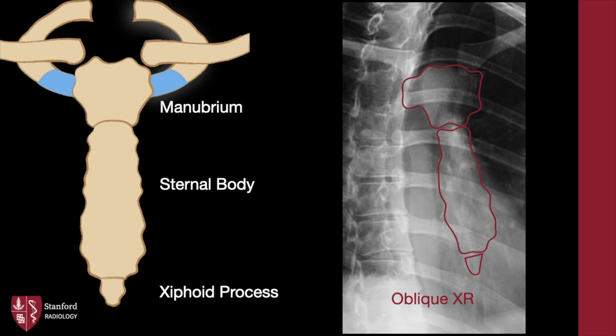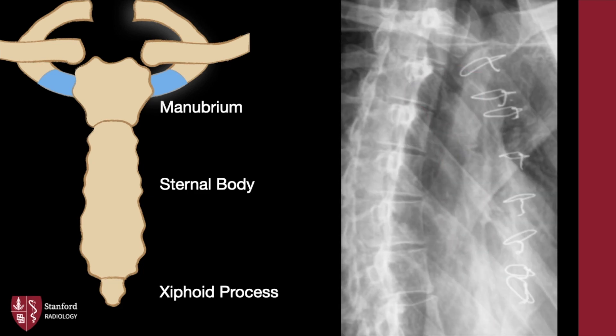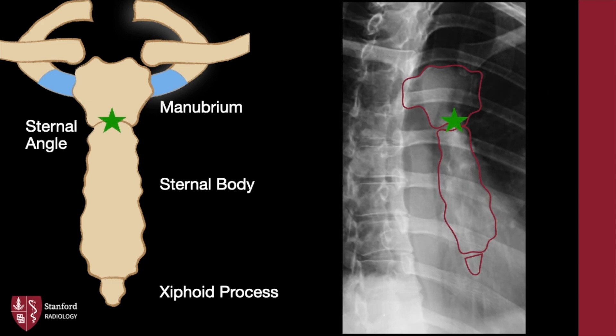The sternum is difficult to visualize on a true frontal radiograph because of multiple overlying structures. As a result, a dedicated view of the sternum requires oblique positioning. Check out this comparison study, wherein median sternotomy wires nicely outline the border of the sternum. The first important landmark is the sternal angle at the manubral sternal junction. Next is the jugular notch, a palpable landmark at the base of the ventral neck.